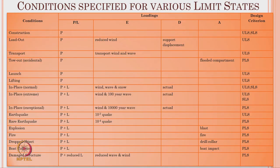Different conditions are specified for various limit states — construction, load-out, transport, tow-out, launching, lifting, in-place, in-place extreme, in-place exceptional, earthquake, rare earthquake, explosion, fire, dropped objects, collision, and damage structure. For each condition, the appropriate P, L, E, D, and A load categories are assigned, and the relevant analysis — ULS, FLS, SLS, etc. — is specified in the design table.